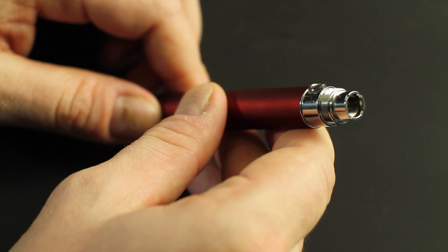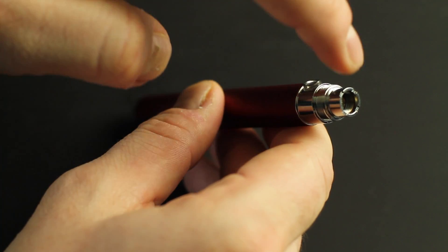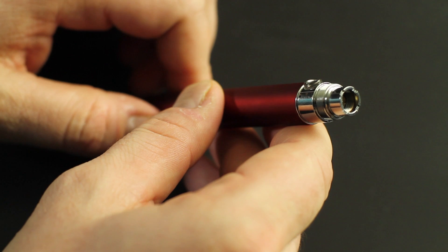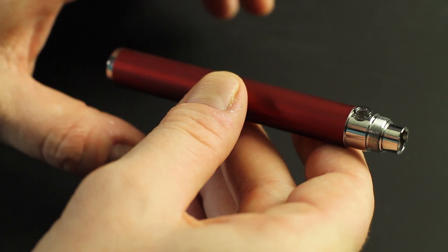So now on to the Ego. So before using your Ego C-Twist, just give it a quick inspection. A couple things to look out for, just make sure that your positive contact is clean and there's no corrosion or juice on it. Also make sure that your battery isn't expanding at any point.